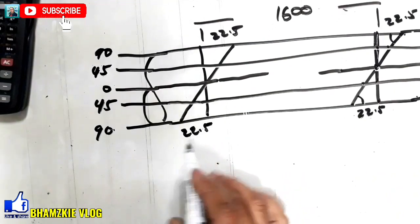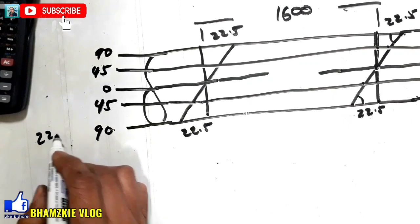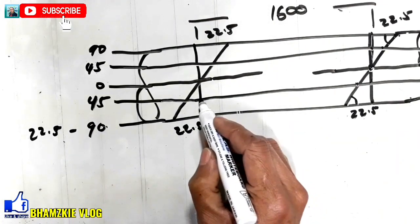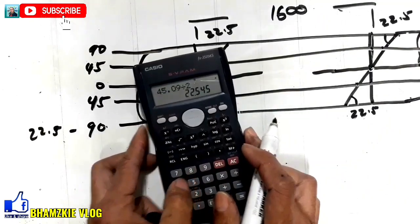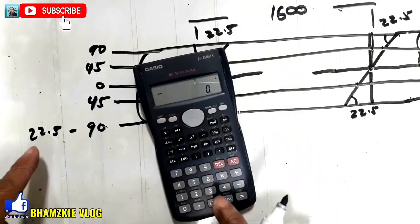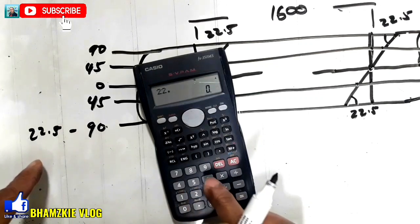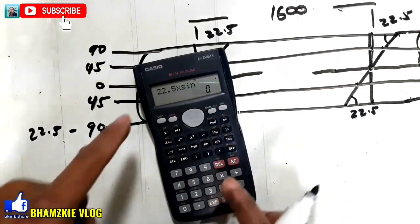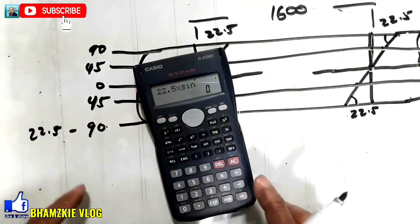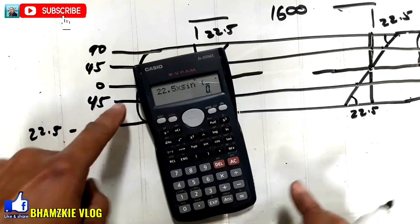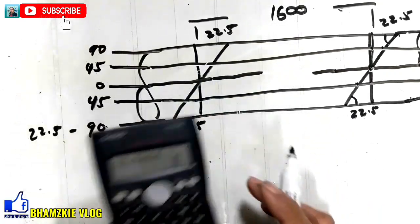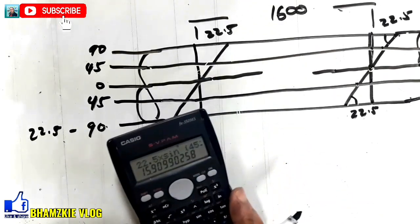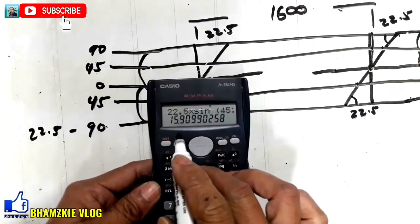Yung measurement natin sa 90 degree is 22.5. Yan yung ating measurement. So, dito naman sa 45 degree, para makuha ninyo yung measurement nito simula rito hanggang dito, ganito lang ang pag-calculate. Kuhanan ninyo yung cutback nya sa 90 degree is 22.5. I-times nyo lang sa sine — sine of 45 degree. Itong line degree na ito is 45 degree yan. 45 degree equals 15.90 or 16. Equivalent na siya sa 16 kung i-run off natin.